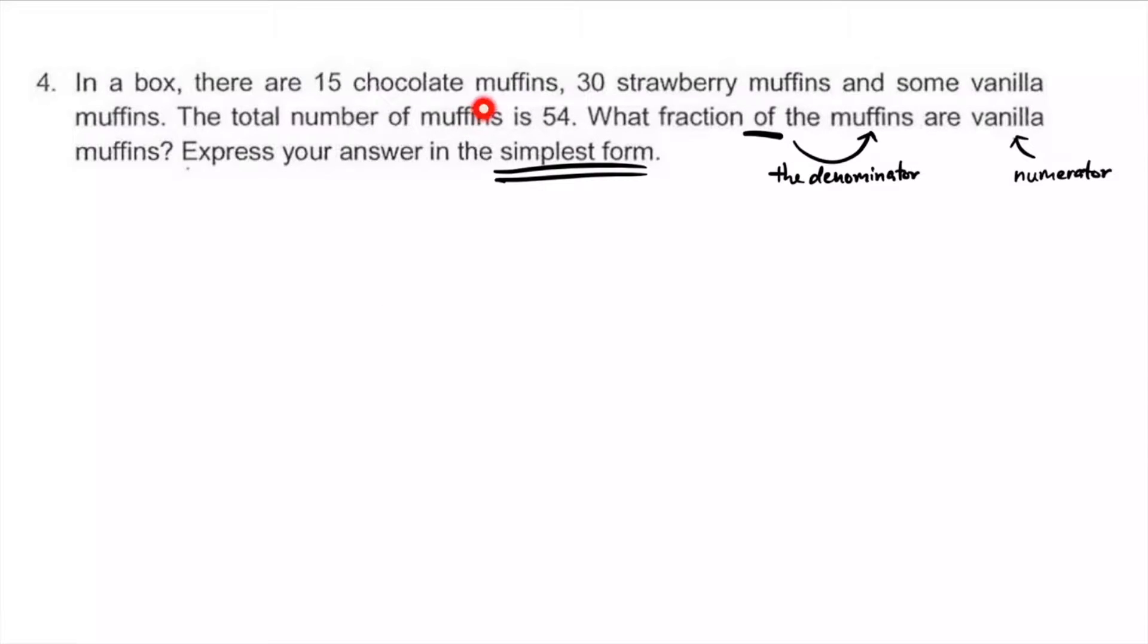In a box, there are 15 chocolate muffins, 30 strawberry ones, and an unknown number of vanilla muffins. The total is 54. We can find the number of vanilla by taking the total minus 15 minus 30. What fraction of the muffins - I pay attention to the word 'of' because that points to the denominator.